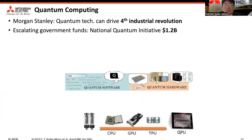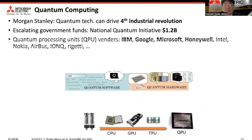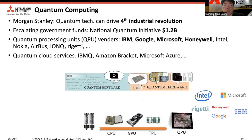Some say quantum computing can drive the fourth industrial revolution in the world, and government funding is growing. There are many vendors producing quantum processor units, QPU — for example, IBM, Google, Microsoft, and Honeywell — and they are providing quantum cloud services.